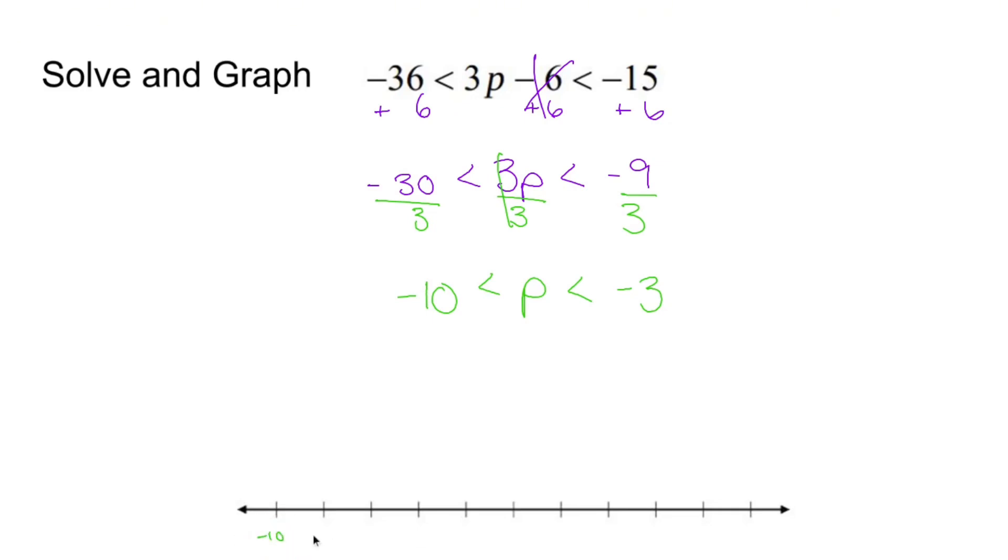So let's do negative 10, negative 9, negative 8, negative 7, negative 6, negative 5, negative 4, negative 3, negative 2, negative 1, and 0.